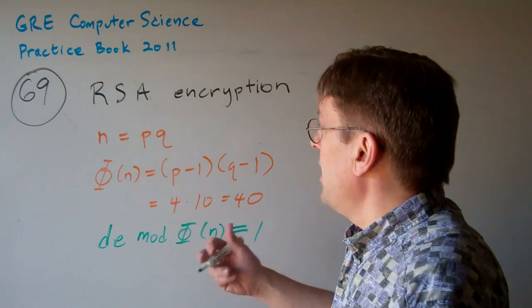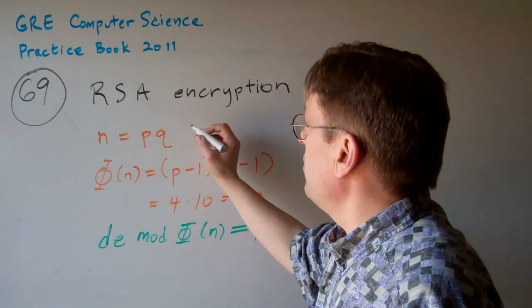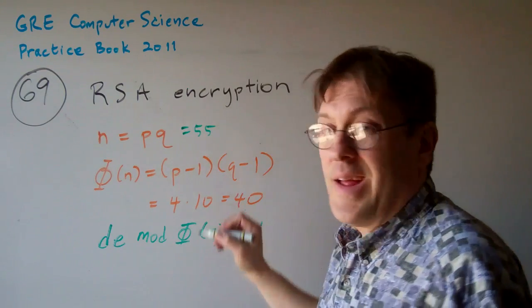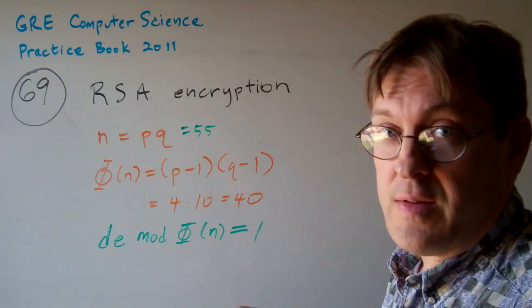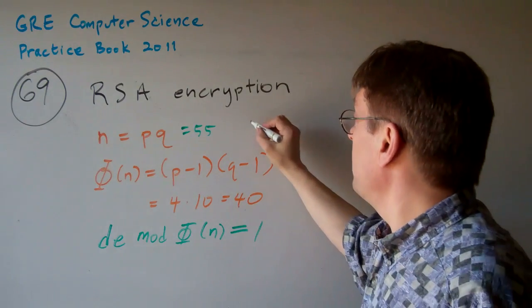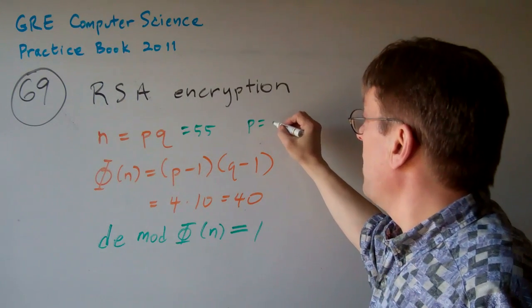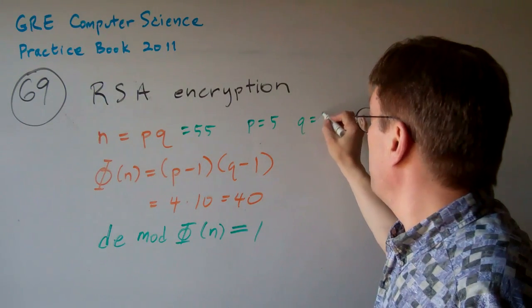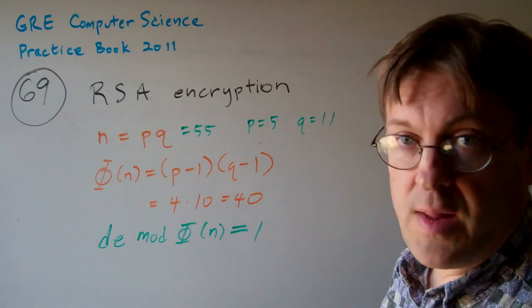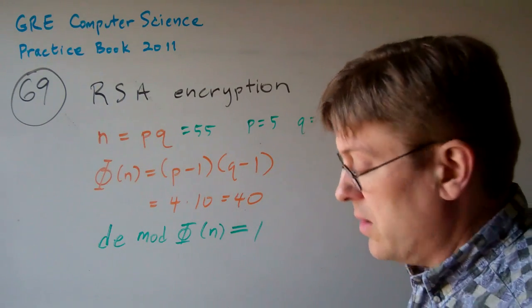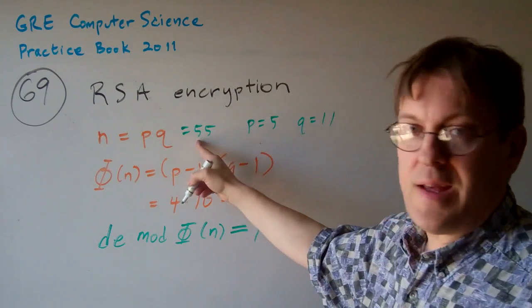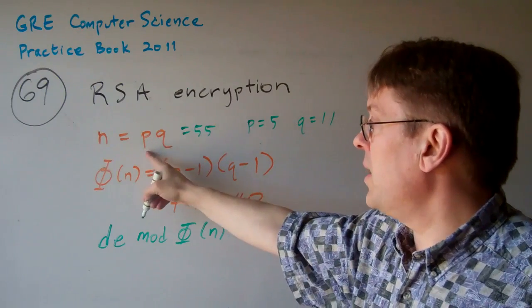But let's just suppose that you can kind of guess that because we know N equals 55, it doesn't leave us a lot of places to go. P is going to be 5, and Q is going to be 11. It might be P is 11 and Q is 5, whatever, it doesn't really matter.